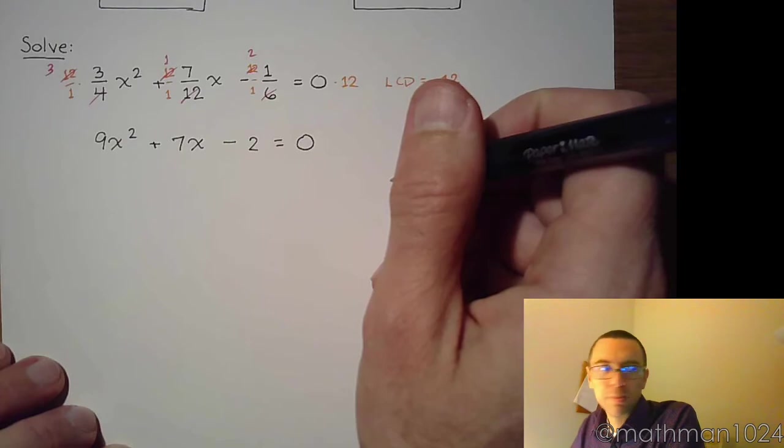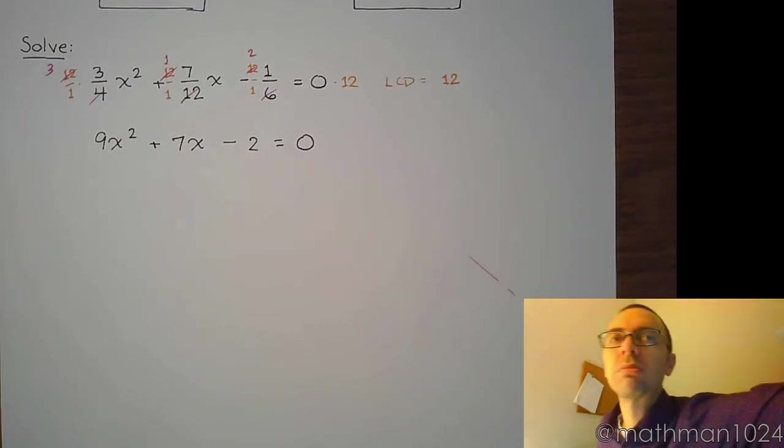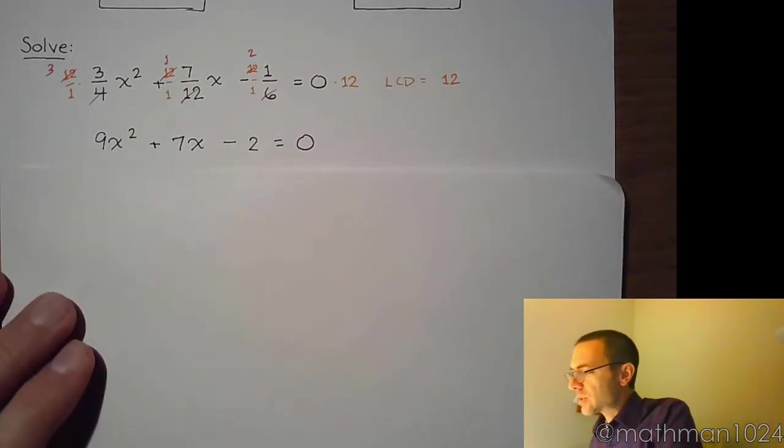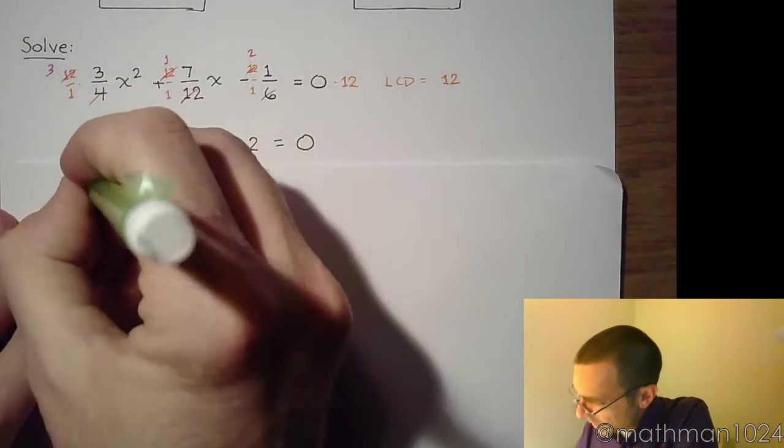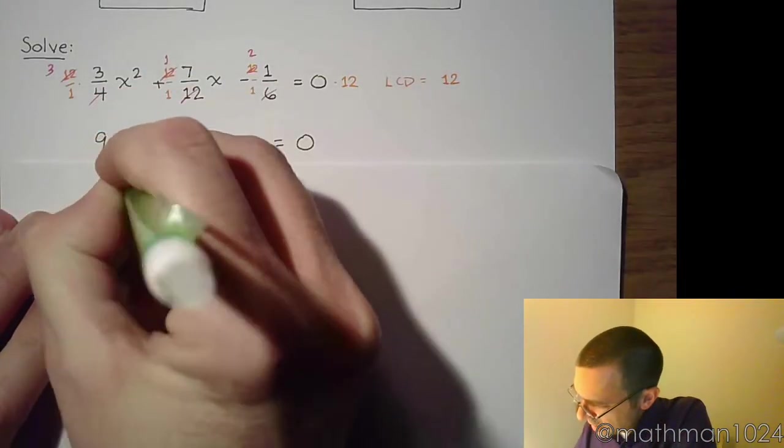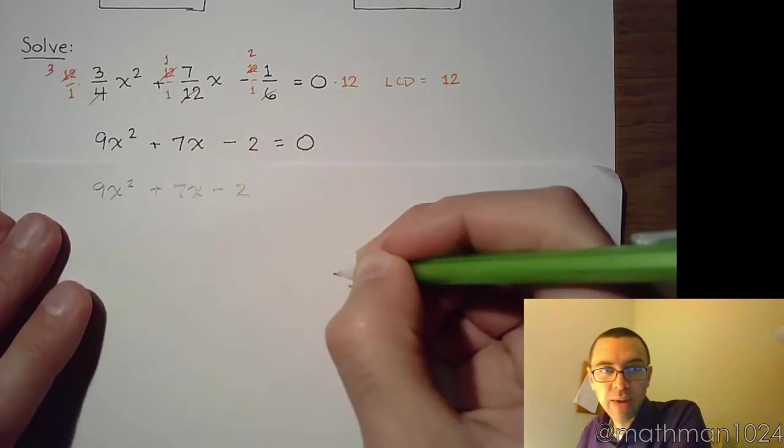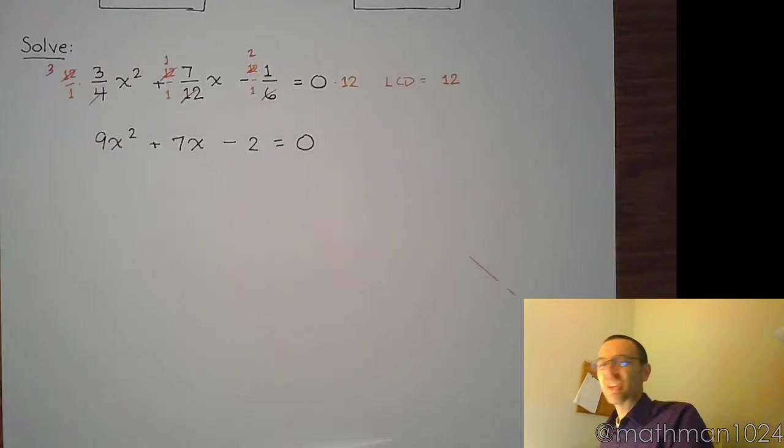Now, we hope that this guy factors. So maybe we just find a scratch piece of paper and let's see if we can try to factor this. So 9x squared plus 7x minus 2, and I'm trying to factor this.